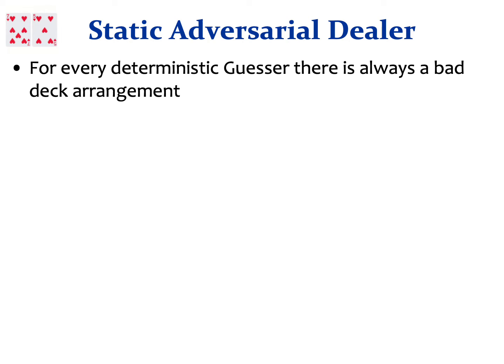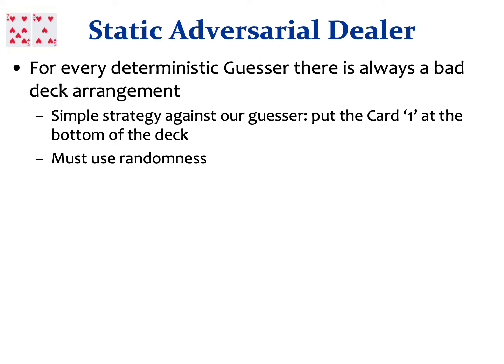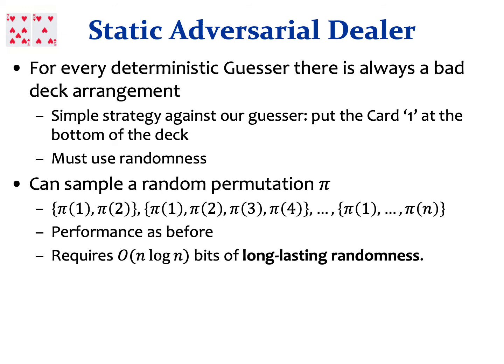A simple adversarial argument shows that for every deterministic guesser there is always a bad deck arrangement on which that guesser manages to make at most a single correct guess, as guessing the last card correctly may be inevitable. This is also true for our guesser — all one has to do is put card 1 at the bottom of the deck, and our guesser will continue guessing it over and over, resulting in a single correct guess on the last card. So it is clear that we must use randomness against static dealers.